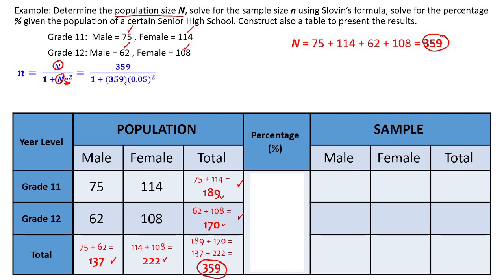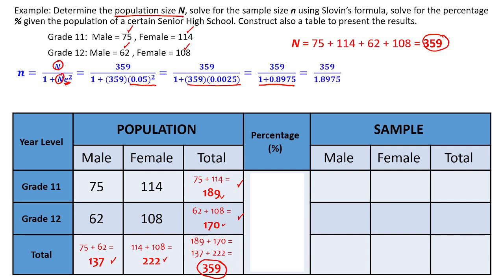Let's use PEMDAS — start with the exponent. How much is 0.05 squared? That's 0.05 times 0.05, which gives you 0.0025. Now multiply that to 359: 0.0025 times 359 gives you 0.8975. Then add 1, so 0.8975 plus 1 gives you 1.8975. Now divide: 359 divided by 1.8975.